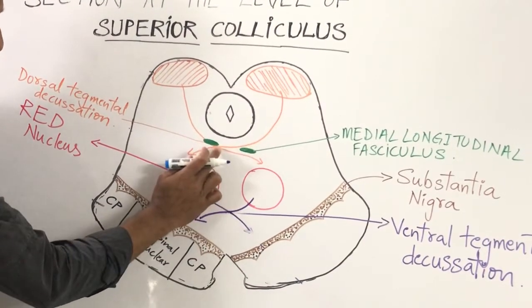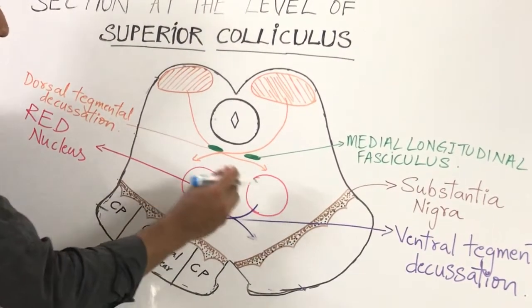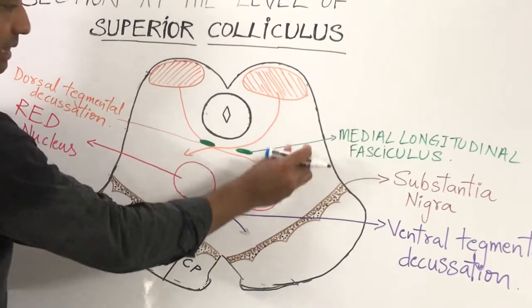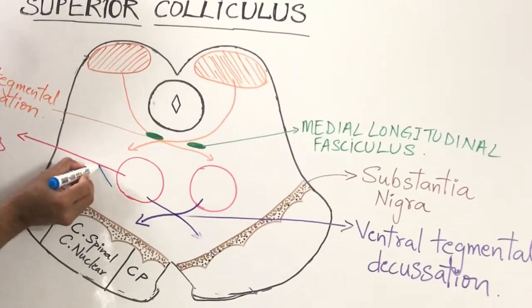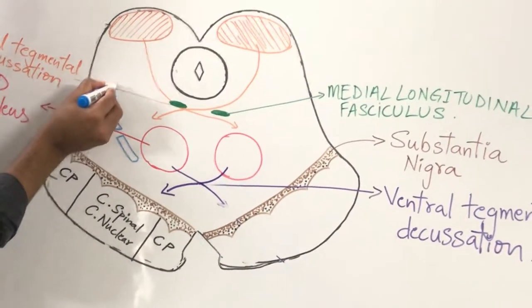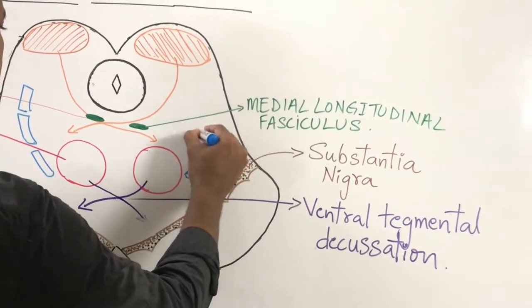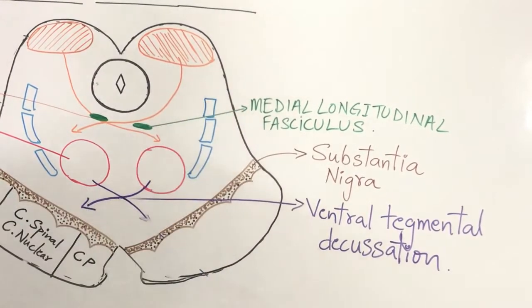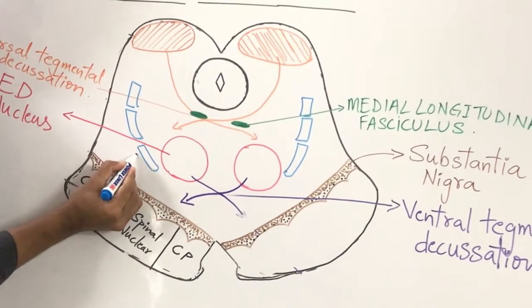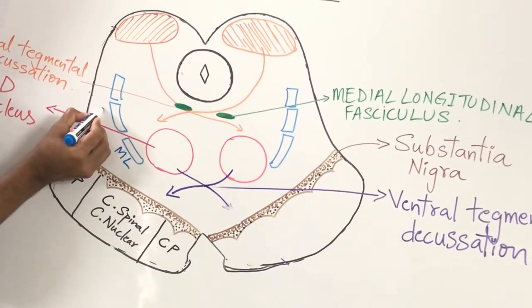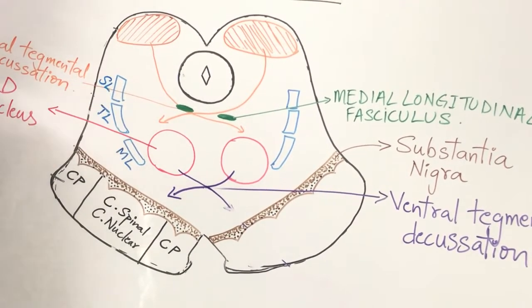On either side of the midline in the tegmentum you can see two bundles of fibers coming from the vestibular nuclei — these are named the medial longitudinal fasciculus (MLF). Now let us mention some important ascending tracts in the tegmentum: medial lemniscus, trigeminal lemniscus, and spinal lemniscus.